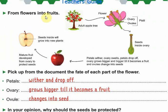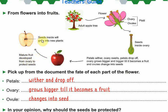Now from flowers into fruits. When the flower opens, the petals wither and drop off. The ovary will grow bigger and bigger until it becomes a fruit, and the ovules inside the ovary will change into seeds. So the ovary changes into a fruit — this is a mature fruit developed from the ovary, and inside it we can see seeds which will grow again into a new plant. This is the plant cycle.